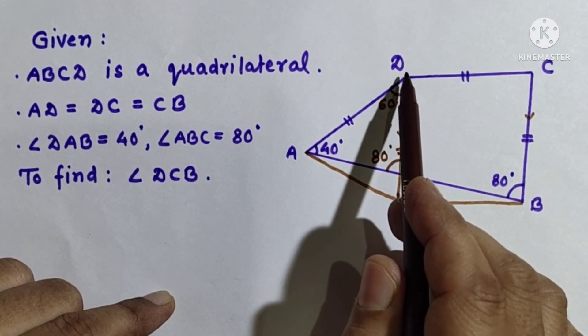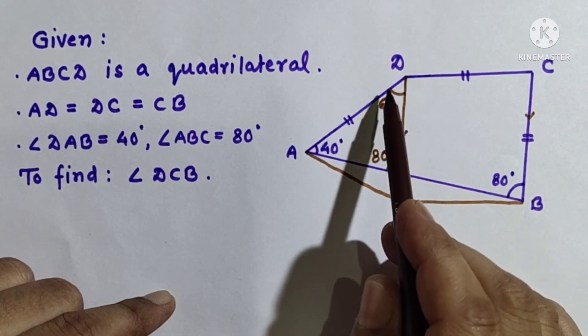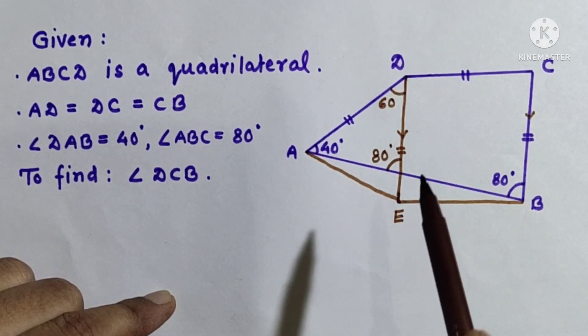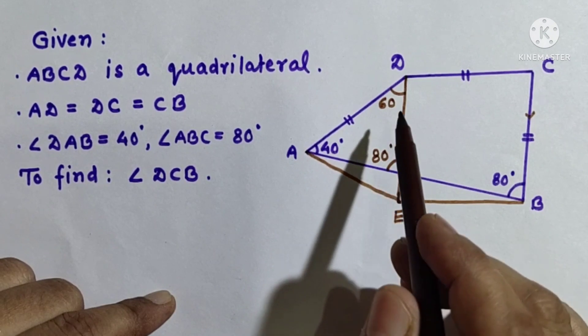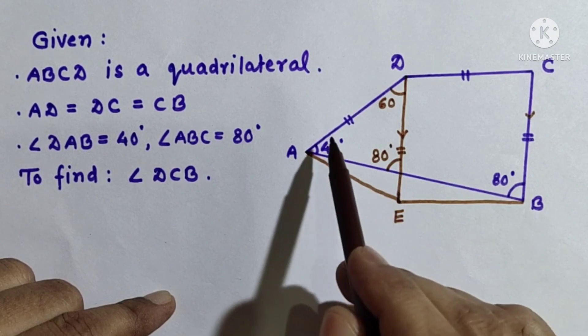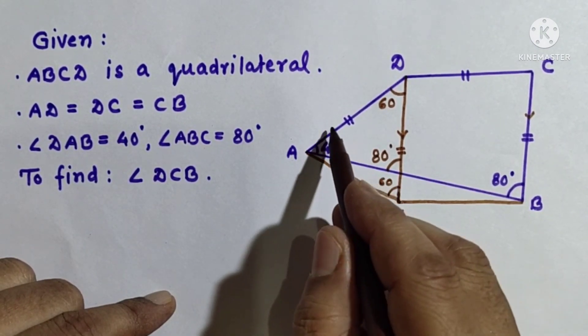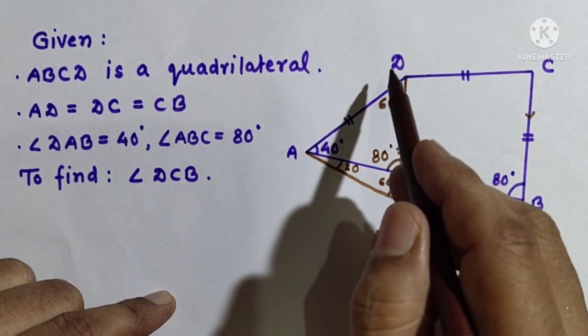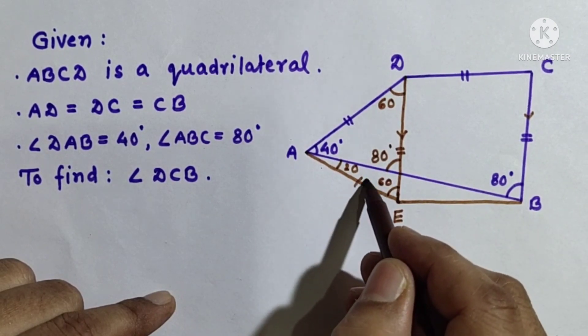Now consider triangle DAE. In triangle DAE this is 60 degree and DA is equal to DE, so therefore it is an equilateral triangle because this is 60 and these two are equal. So 120 by 2, 60 is 60, so this is also 60 and this is 60.